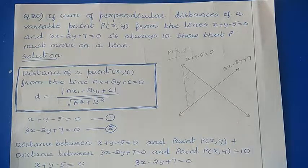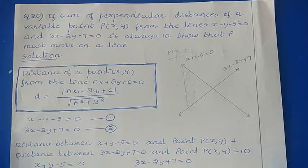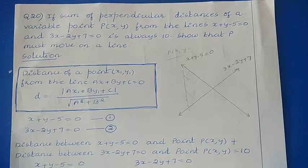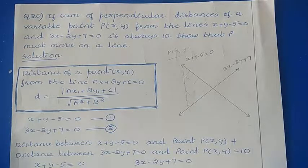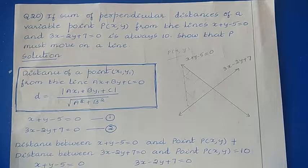If the sum of perpendicular distances of a variable point P(x,y) from the lines x+y-5=0 and 3x-2y+7=0 is always 10, show that P must move on a line.